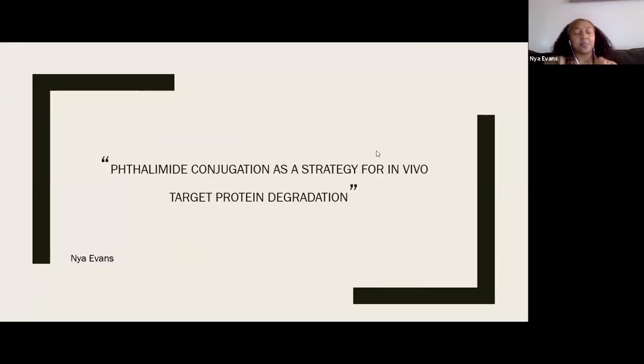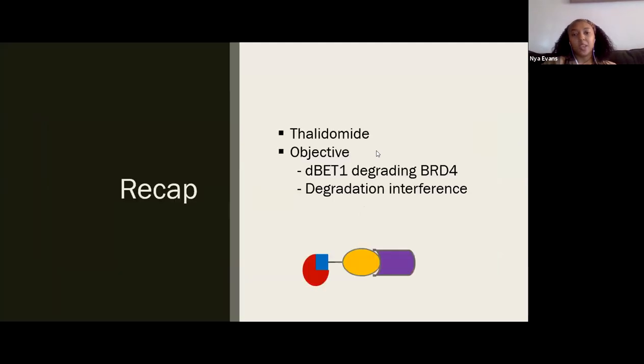DBET1. So this is a continuation on the paper that I introduced last week. It's the thalidomide conjugation as a strategy for in vivo target protein degradation. I want to start with a recap. We talked about this important compound called thalidomide that's able to bind to an E3 ligase called CRBN. The researchers chose a target protein and then found another protein that can inhibit that target protein and eventually created a PROTAC scheme. The objective of what I'm going to be talking about today is looking at whether or not DBET1 can degrade BRD4 and showing that in different assays. And then they also wanted to see which compounds can interfere with the degradation of BRD4.